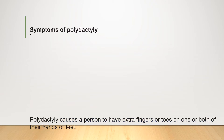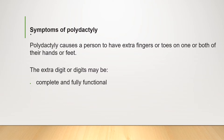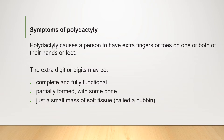Regarding symptoms of polydactyly, it causes a person to have extra fingers or toes on one or both of their hands or feet. The extra digit or digits might be complete and fully functional, or it might be partially formed with some bones, or it might be just a small mass of soft tissue, also called a nubbin.